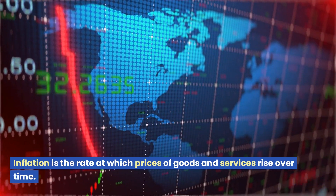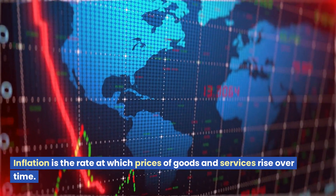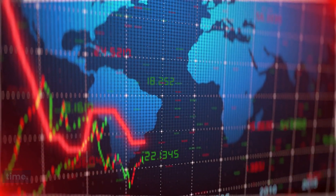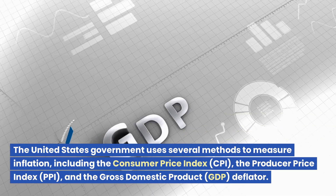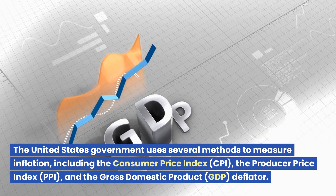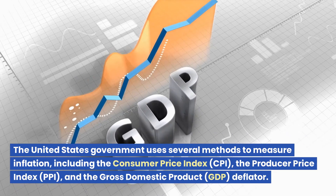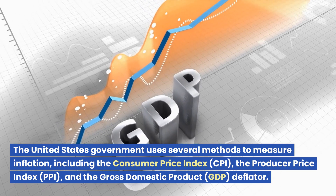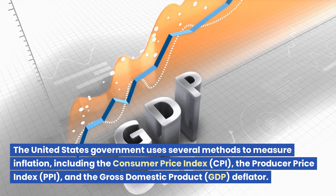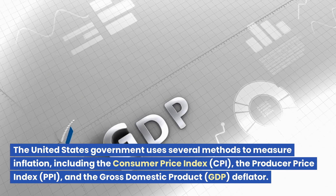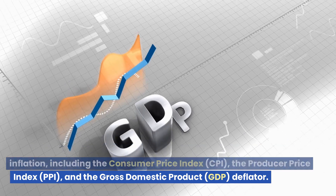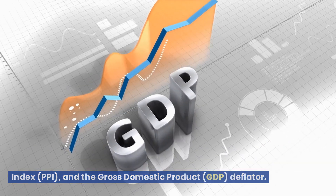Inflation is the rate at which prices of goods and services rise over time. The United States government uses several methods to measure inflation, including the Consumer Price Index (CPI), the Producer Price Index (PPI), and the Gross Domestic Product (GDP) deflator.